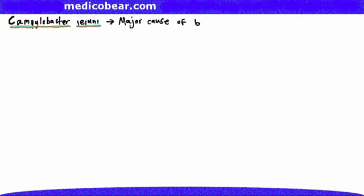I really only have one question for you, and that is: are you ready for a high-yield USMLE review of Campylobacter jejuni? Campylobacter jejuni is a major cause of bloody diarrhea.